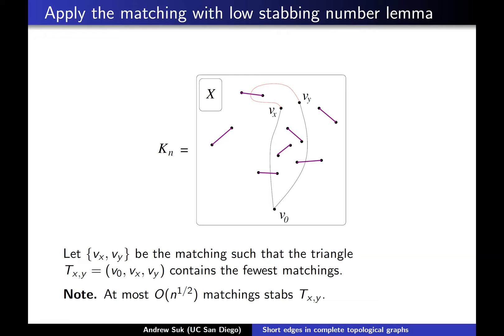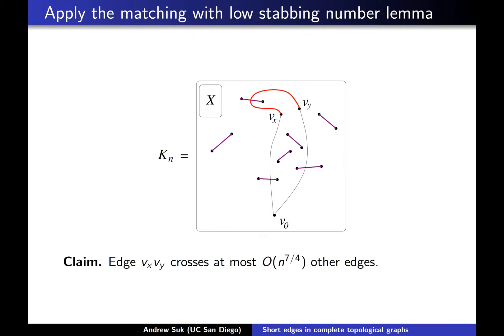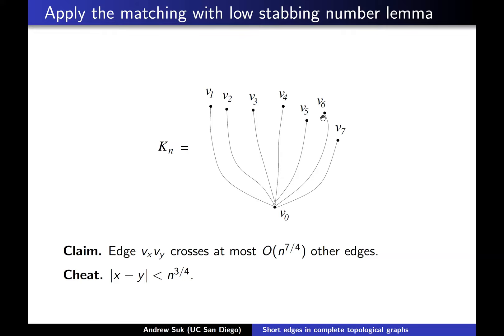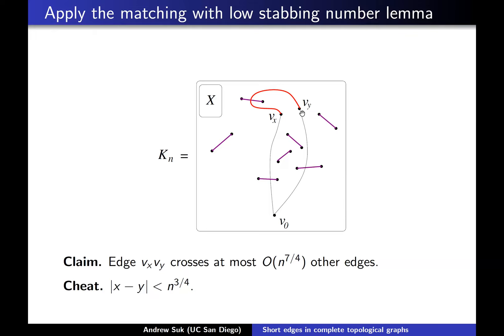One thing I'm going to have to note — which you can easily get from that matching lemma — is that the distance between V_x and V_y is also going to be very short. Remember there was this radial ordering of the vertices, and any two vertices has a distance between them. What I'm saying is that the distance between V_x and V_y in that radial ordering will just be on the order of n^(3/4).